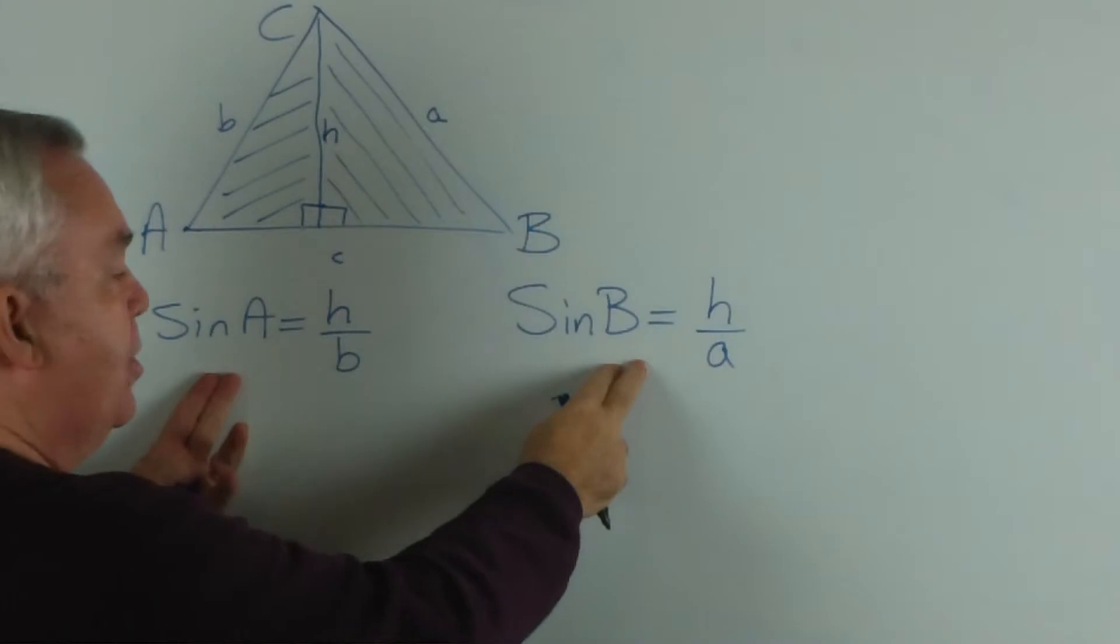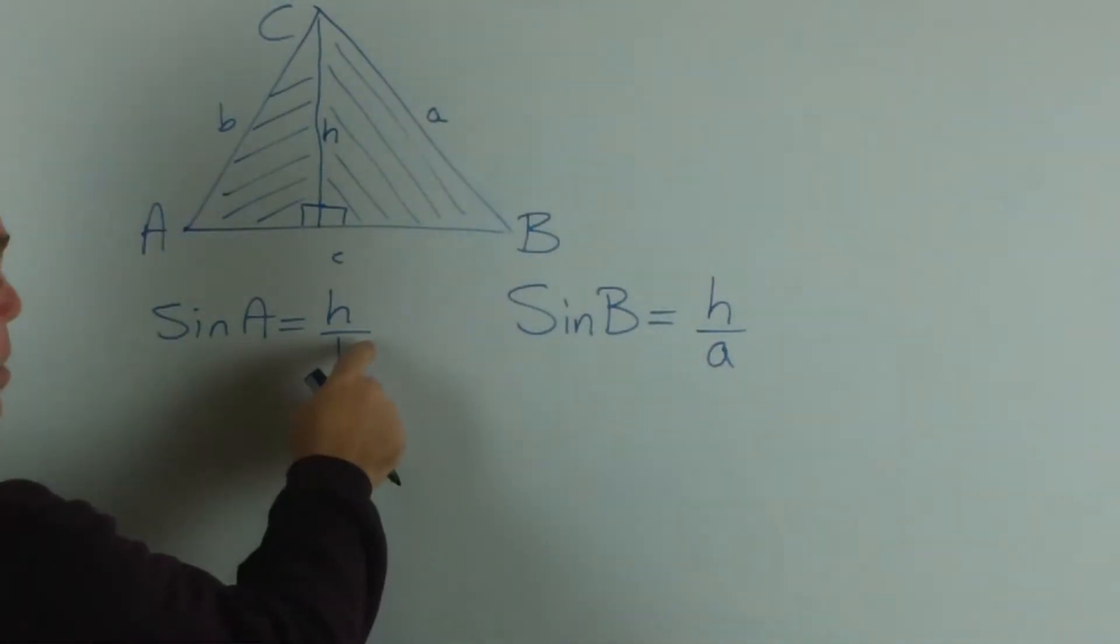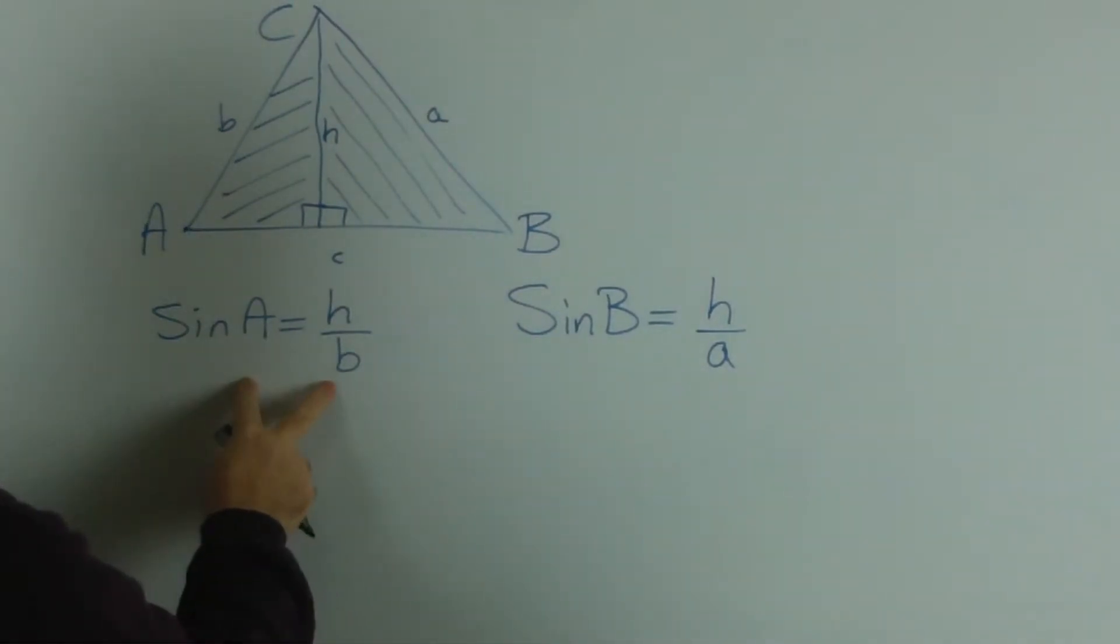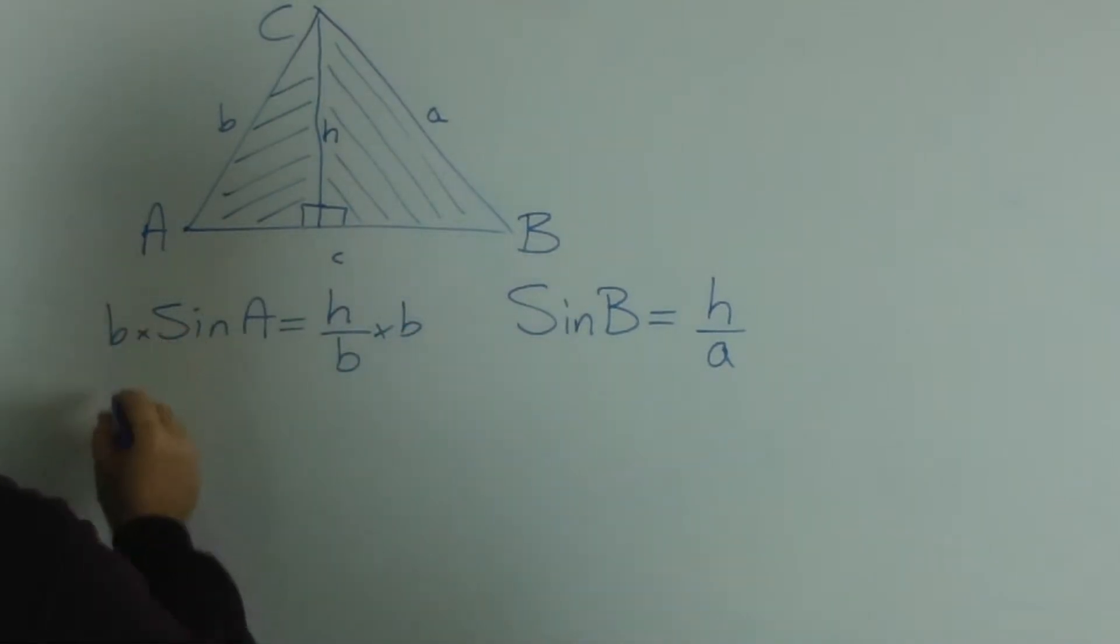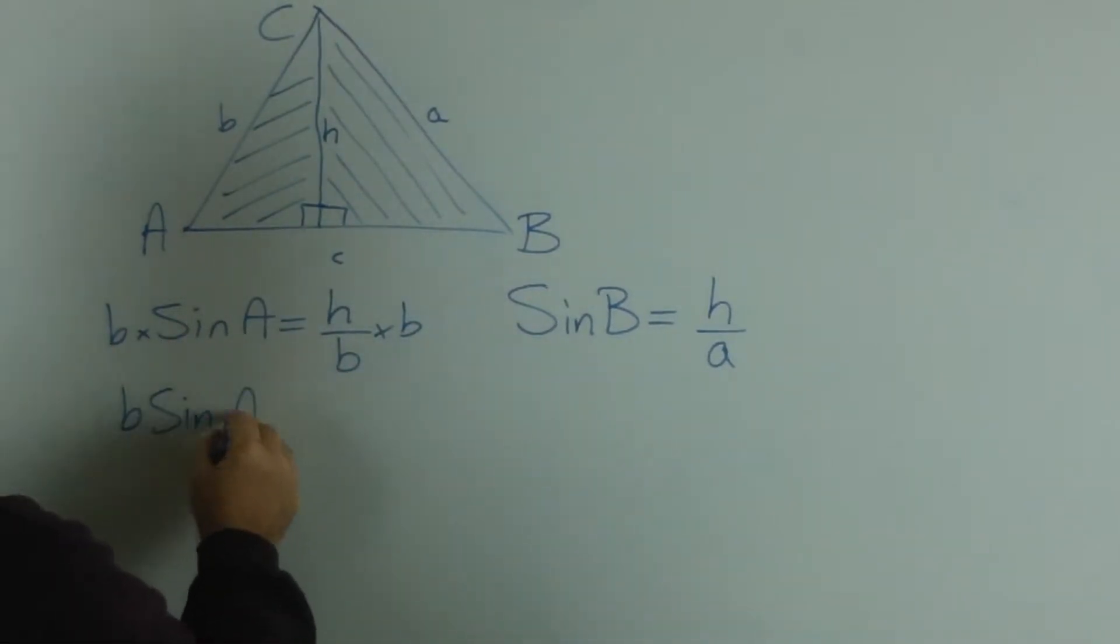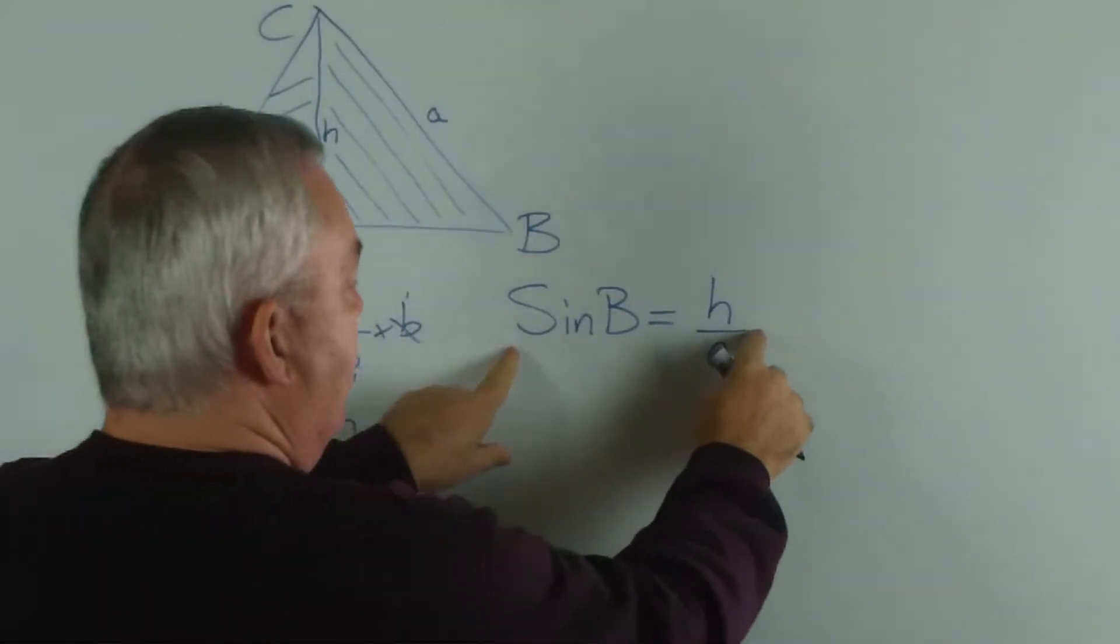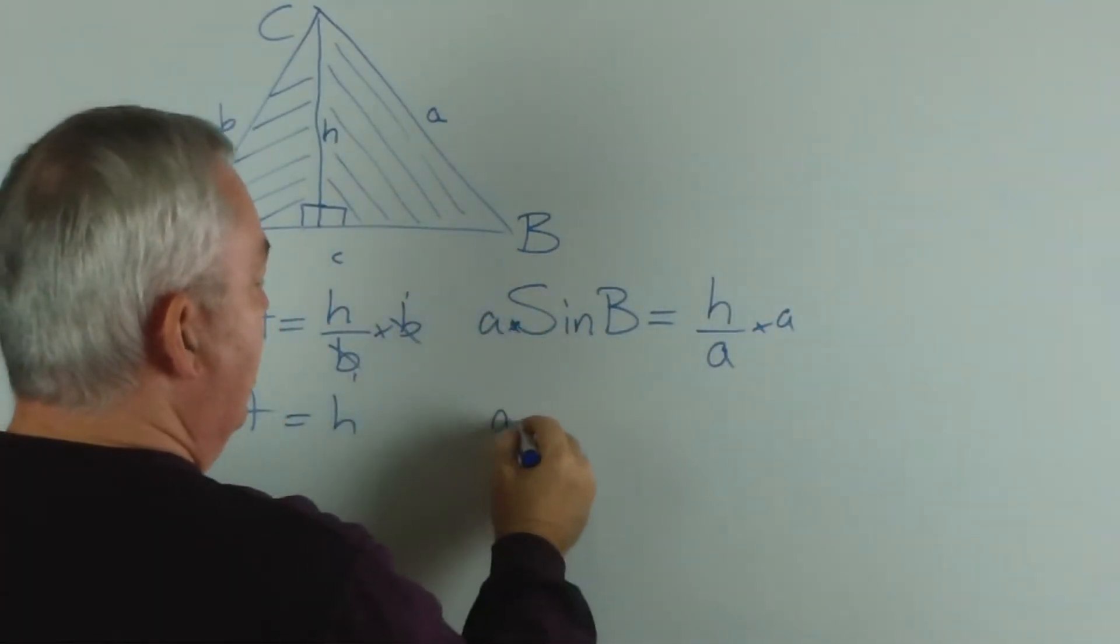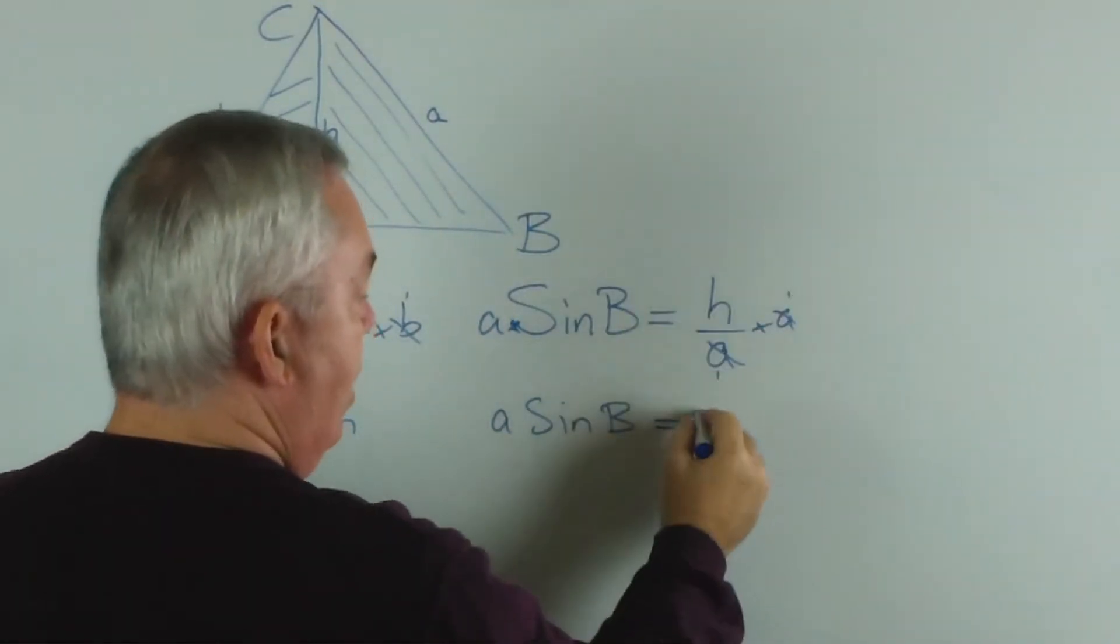Now, I have two equations and I wish to eliminate the h from both. So, the simple thing is to get the b away from this fraction and the a away from that one. To do that, I'll multiply both sides of this equation by b. So I have b sin A equals h. Similarly here, I'll multiply both sides by a and get a sin B equals h.